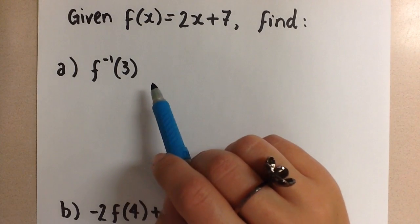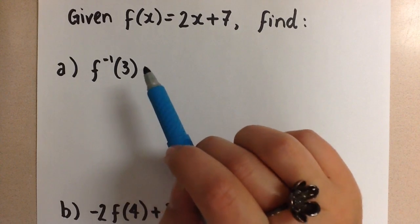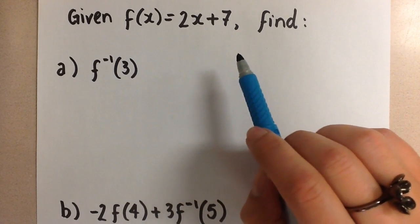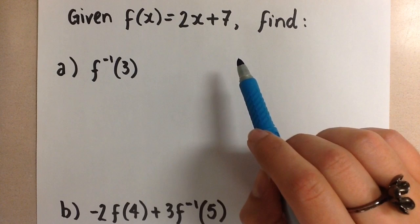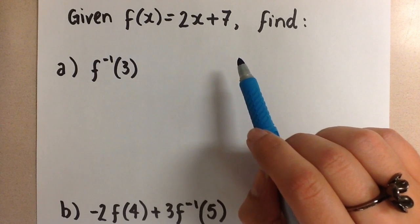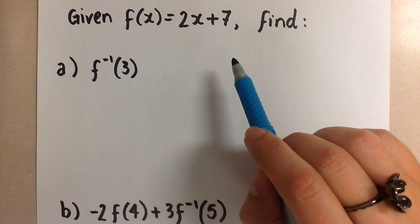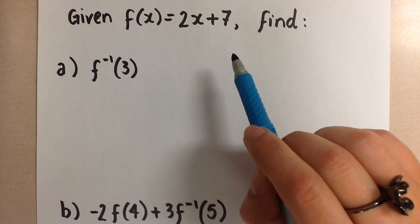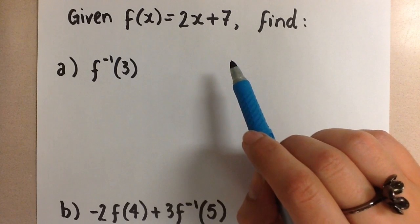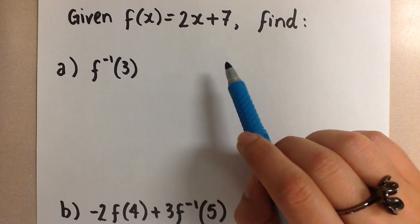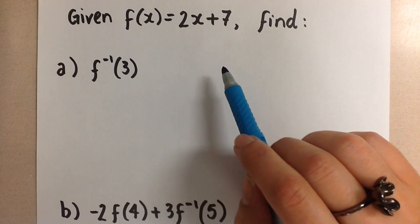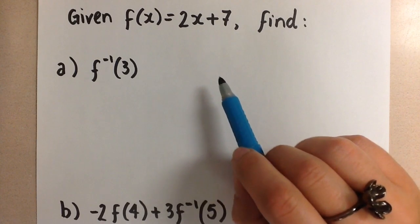To find the inverse of a function, that means to reflect the function over the line y equals x. If we are to do it algebraically, then we need to switch the independent and dependent variables and then solve for our new dependent variable.